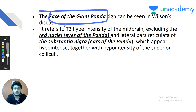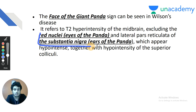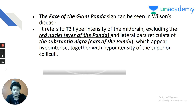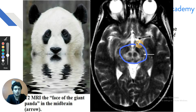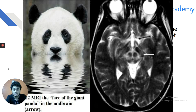The face of the Giant Panda sign results from sparing of the red nucleus of the midbrain and substantia nigra while surrounding midbrain shows T2 hyperintensity from copper deposition. Copper deposition sequence: putamen first → caudate → globus pallidus → midbrain → pons → cerebellum.